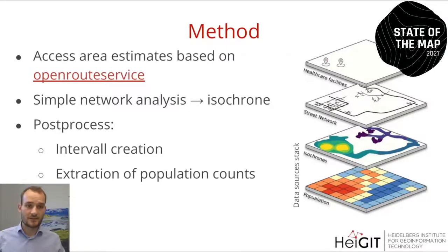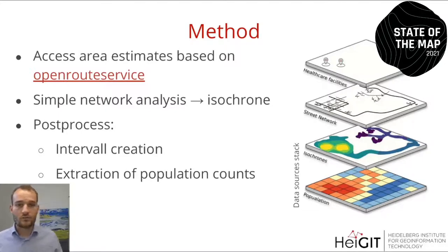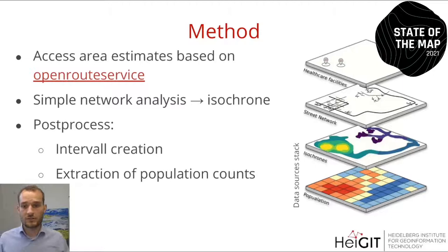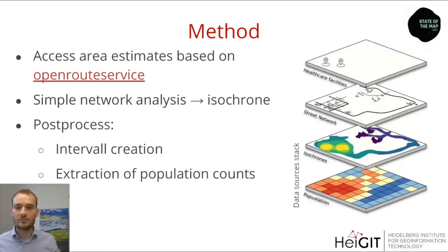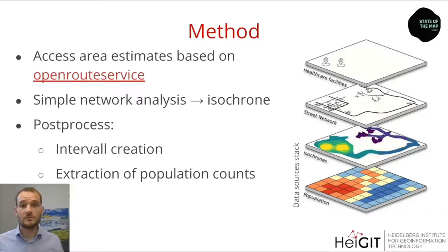So what is the method behind the accessibility areas? These estimates are based on the OpenRouteService - a routing engine software developed here at HiGIT, with a public API. We use this engine to create isochrones. An isochrone is basically the area you can reach from a certain location in a certain amount of time. We did some processing, created intervals, and extracted population counts. Important to note about OpenRouteService: there are different profiles of mobility - we used car, so everything in the web application is motorized travel for now, but there are also possibilities for walking or bike travel.